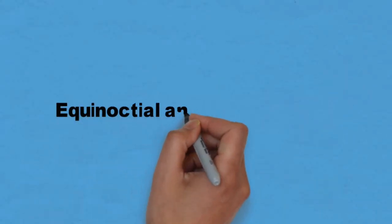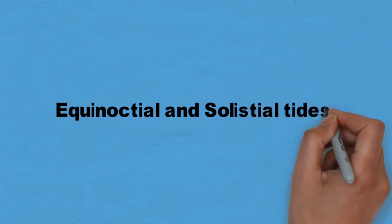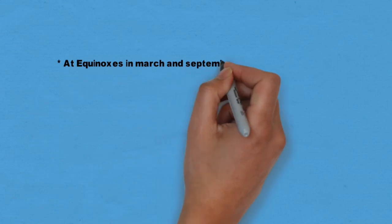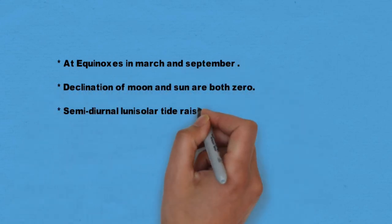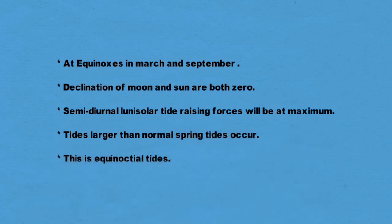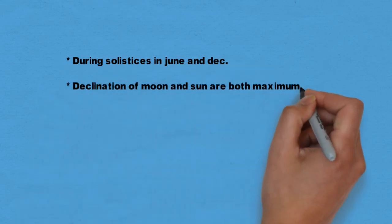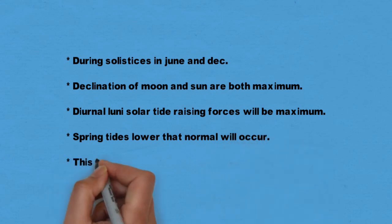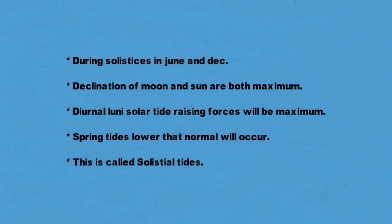Let's look at equinoctial and solstral tides. At equinoxes — in March and September — the declination of both the moon and sun are zero, so semi-diurnal lunisolar tide-raising forces are at maximum, producing tides larger than normal spring tides — called equinoctial tides. During solstral tides in June and December, the declination of both moon and sun are at maximum, and diurnal lunisolar tide-raising forces are maximum.